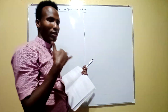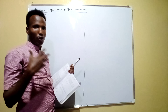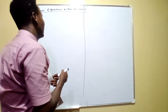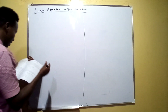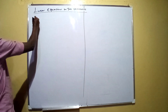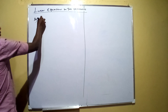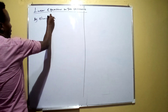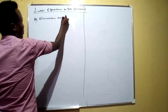Simultaneous equations are solved either by use of the elimination method or the substitution method. Let's start with the elimination method and see how we are going to solve using it.